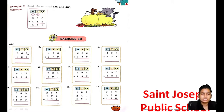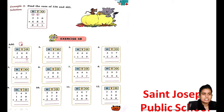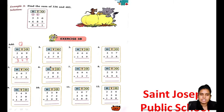9 plus 8 is 17, and 1 carry. 6 plus 2 is 8. 8 plus 1 is 9. 2 plus 1 is 3. So, 397.